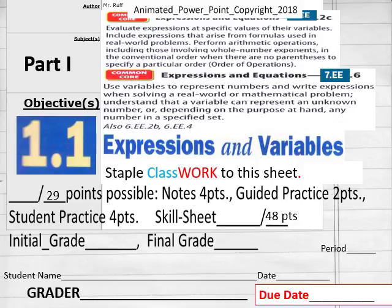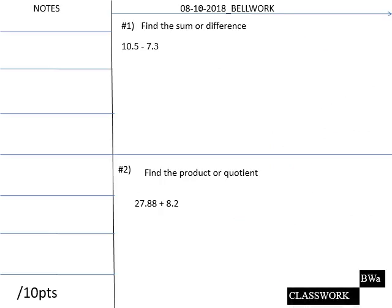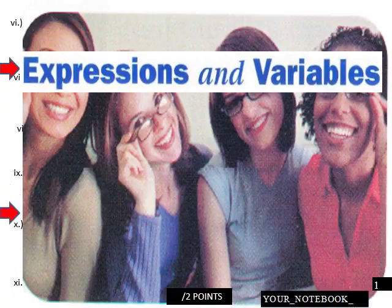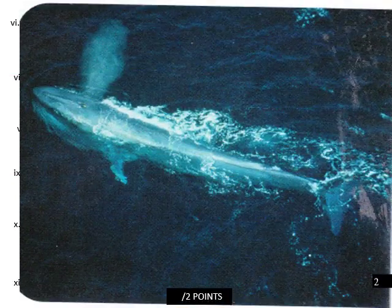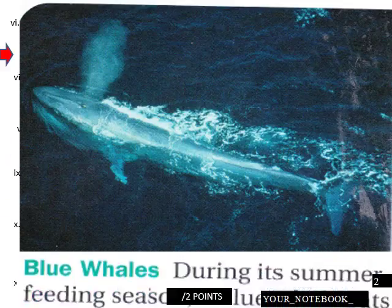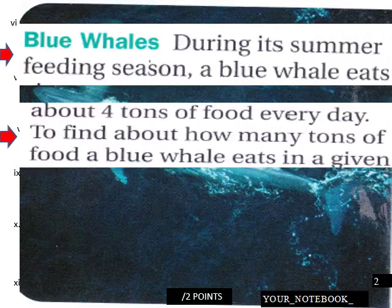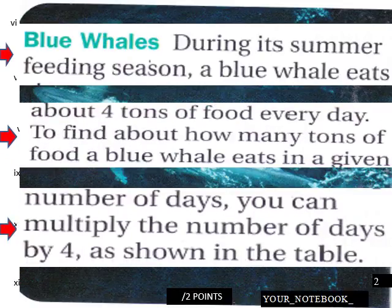This is the title plate for students. This would be the bell work for this lesson — finding some differences. It's very simple but it's kind of like a warm-up to get students going and get their brains started. The lesson covers expressions and variables. There are good graphics and the theme is blue whales — a word problem about the number of tons a blue whale can eat in a given number of days.